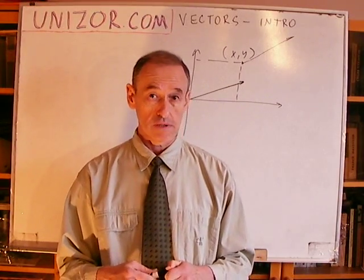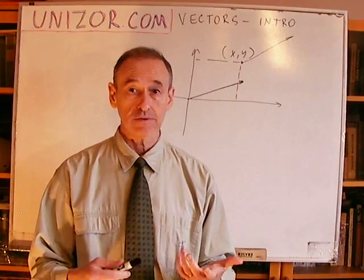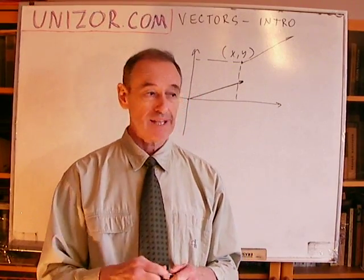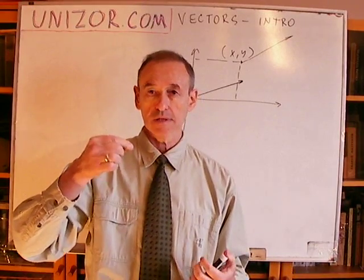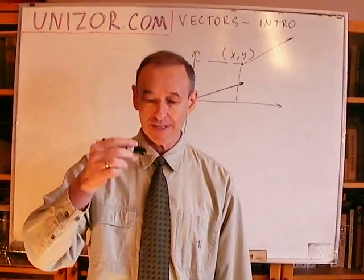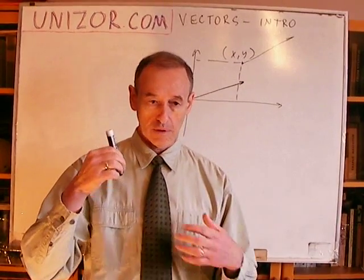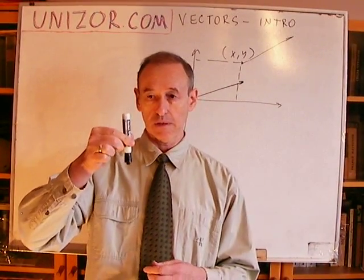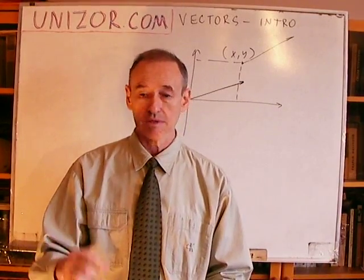Vectors are very convenient in physics. Many processes — not only mechanical movement — are represented as vectors in physics. For instance, force is basically a vector because it has a magnitude and a direction. The force of gravity depends on the mass of the Earth, the mass of the subject being attracted, and the direction — which is vertically down. The vector representing the gravitational force is something like this arrow: the length of the arrow is the magnitude of the force, and the direction is downward.